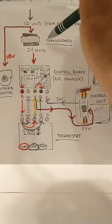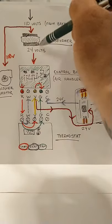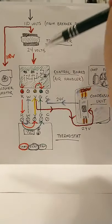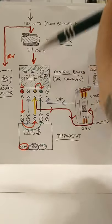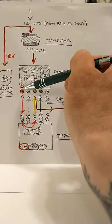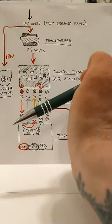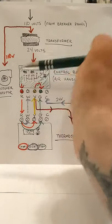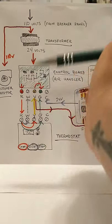Your 110 comes into the transformer, steps down to 24 volts. That 24 volts is used in the control board, and it basically all starts right here at that R terminal at your air handler. The R terminal is usually designated for 24 volts.